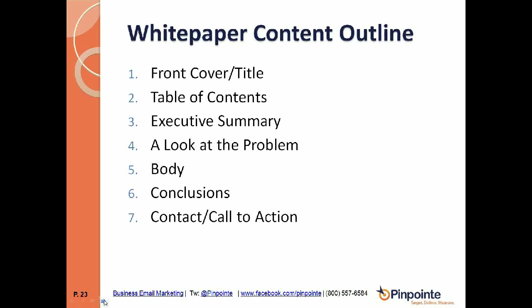A typical white paper outline includes: number one, the front cover with the title; number two, a table of contents; number three, an executive summary; number four, a section called 'A Look at the Problem'; number five, the main body; number six, the conclusion; and number seven, the contact and call to action. These are the basics of an average white paper, though some may have more or fewer sections.